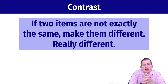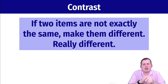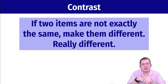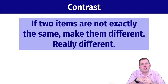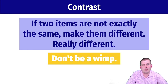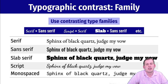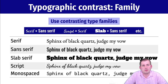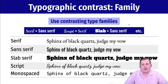The first principle is contrast — the C in CRAP. The main idea is that if two things are not exactly the same, make them different, and make them really different — don't be a wimp about it. There are a whole bunch of different ways to add contrast to designs, and one easy way is with type families. If you've noticed fonts, they come in specific families with similar characteristics.